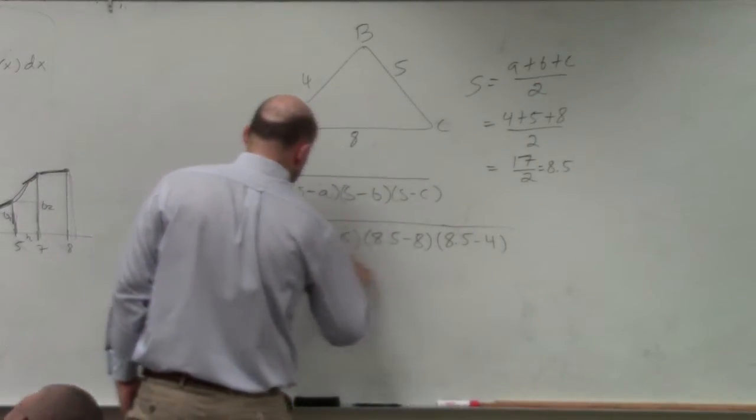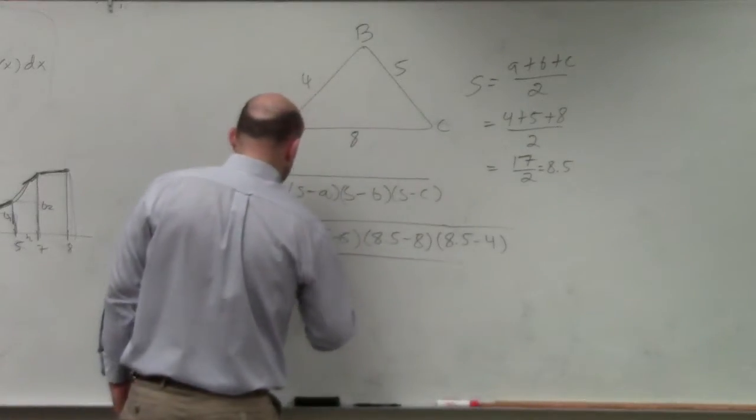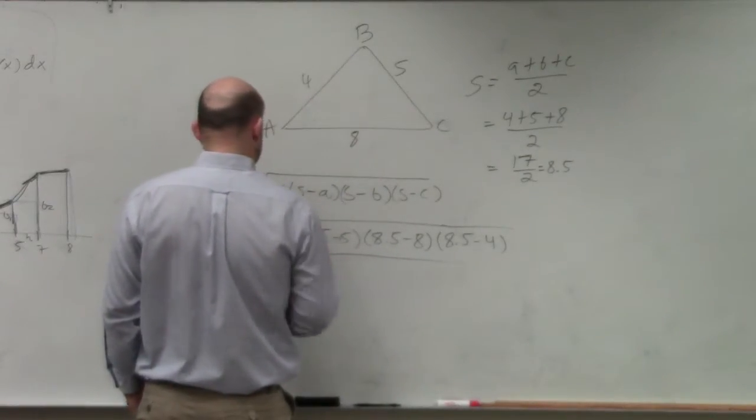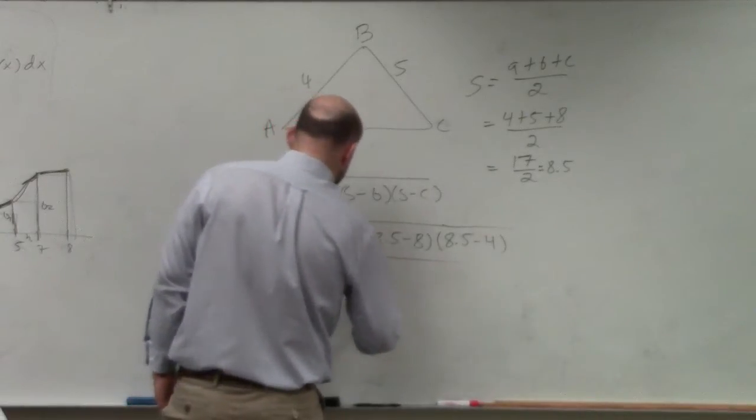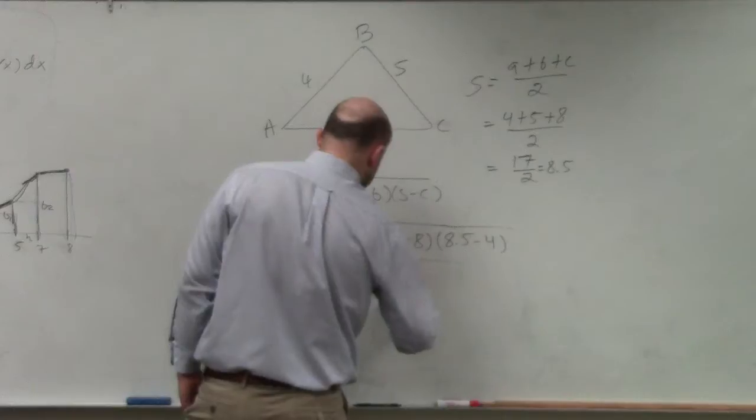Square root, 8.5, and then you're going to do times, oh, it's 8.5 times 5, which is 3.5, times 0.5, times 4.5.